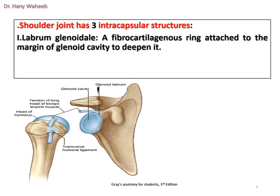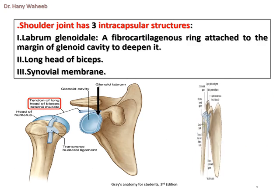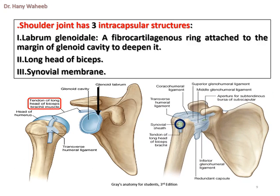The shoulder joint has three intracapsular structures. 1. The labrum glenoidale — a fibrocartilaginous ring attached to the margin of the glenoid cavity to deepen it. 2. The long head of biceps. 3. The synovial membrane.